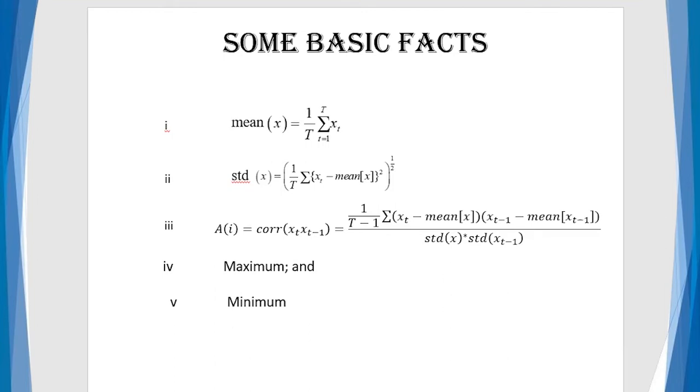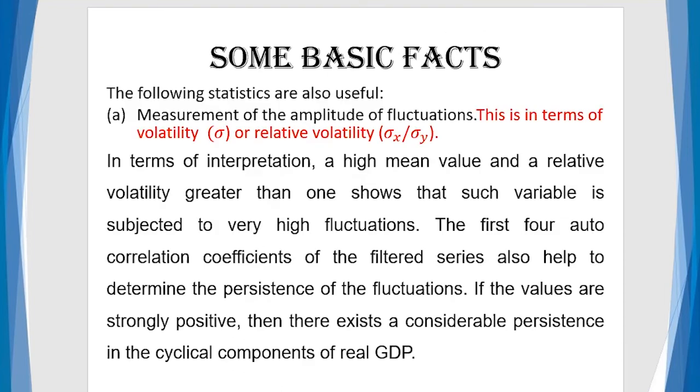Now, in case of business cycle facts and for DSGE modeling, the following are very useful. The number one is the measurement of the amplitude of fluctuation. This is in terms of volatility, sigma or relative volatility, sigma_x, that is sigma of any variable divided by sigma_y. Y represents very often the GDP. So, you are talking about the relationship between the GDP and its components. That's what this means.